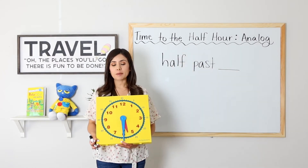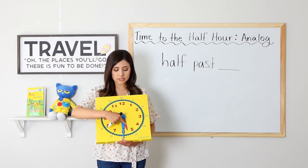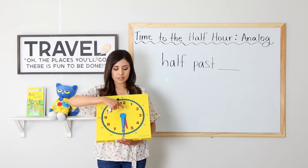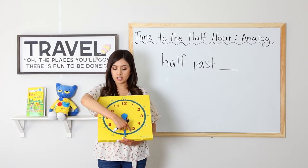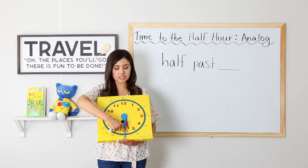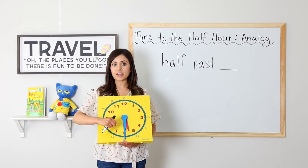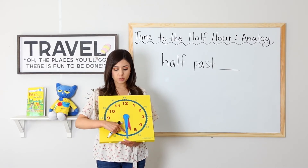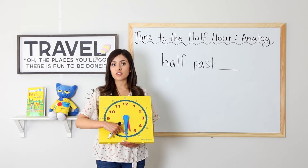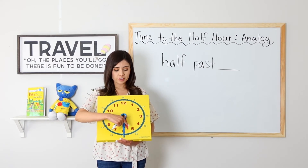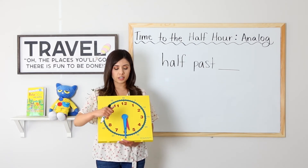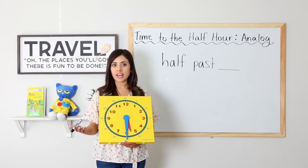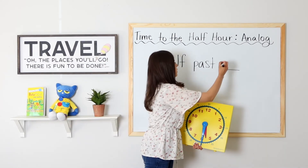Next example. The hour hand is pointing between the five and the six. It's coming this way and has not touched the six yet, so it is still five. The minute hand is pointing on the six, so it is thirty. Five thirty. Or we can say half past five.